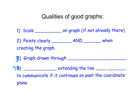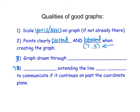There are four good qualities that I expect to see in all of your graphs. First, you always need to scale the y-axis and the x-axis on the graph if they are not already there. Most graphs I give you will have numbers, but if not, you need to scale it so I know what each hash mark means. Second, your points need to be clearly plotted — with dots and labeled as their x-y coordinate, like (7, 3), next to your dot.